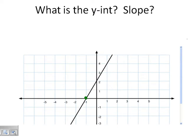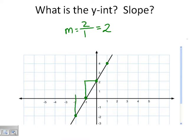Here's a graph. We have a point at (-1, 0) and a point at (0, 2). We rise 2 and our run is 1, so our slope is 2 over 1, which is 2. It doesn't matter what points you choose — if we choose different points, our rise is 6 and our run is 3, and 6 divided by 3 is also 2.